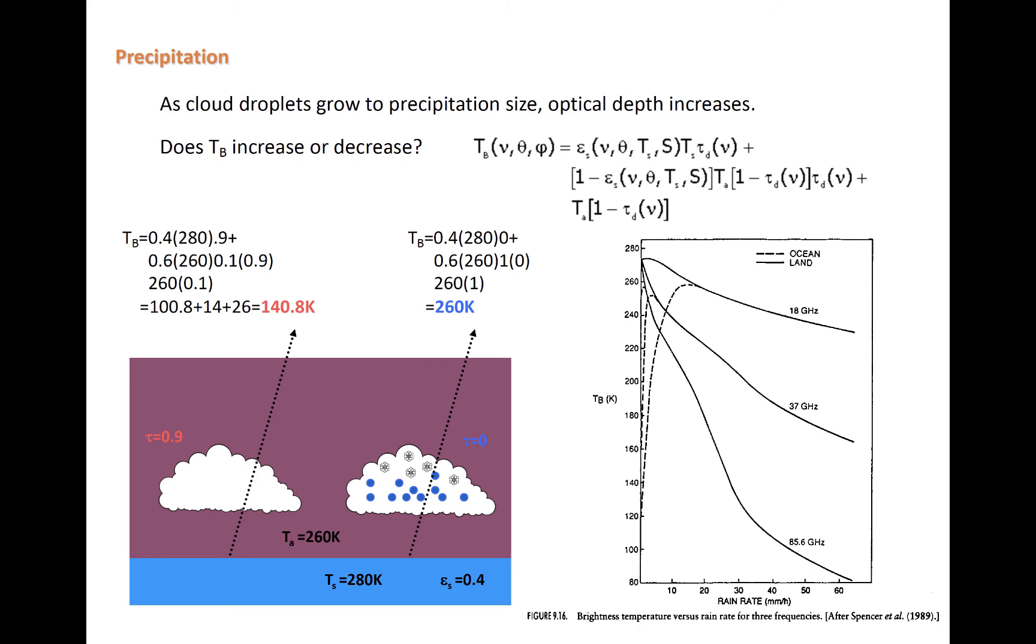Over the ocean, as we continue to the right on the x-axis, rain rates will eventually increase as the brightness temperature decreases. This is because, eventually, no radiation from the poorly emitting ocean reaches the top of the atmosphere, and only the emissions from near the tops of clouds reach space.